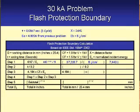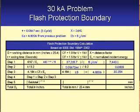You could have just copied that number down from the previous problem because it's the same. Then for step two, take one cycle — 0.0167 seconds — and divide by 0.2 seconds, our normalized value. That gives us 0.0835. For step three, take the normalized incident energy from the previous problem, 4.8206, multiply by the calculation factor of 1.5 and then by 4.184. Step three gives us 30.254.